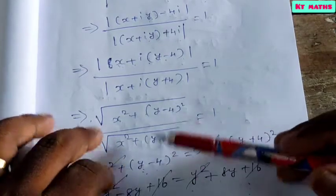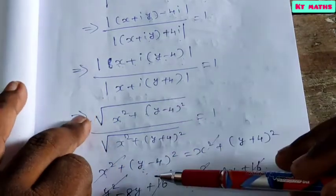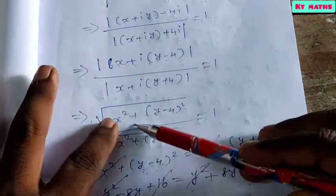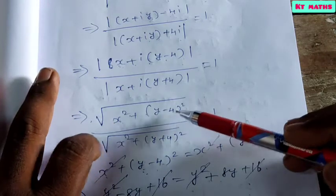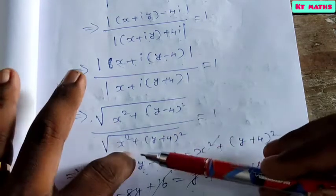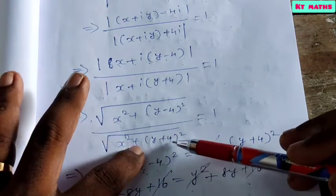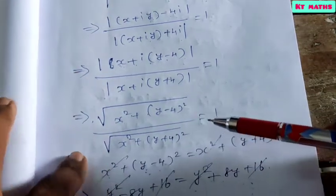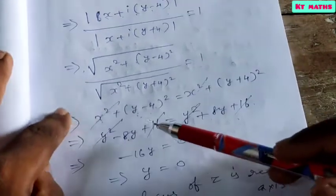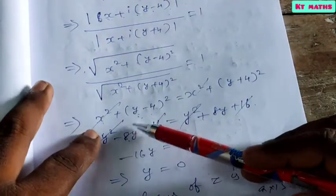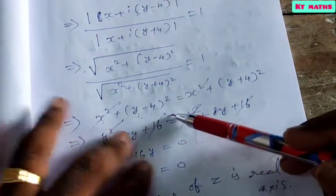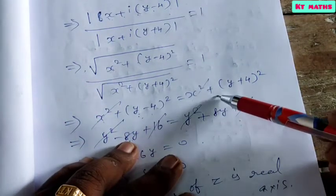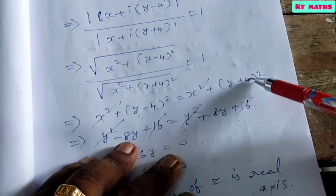Taking squares on both sides, the square roots cancel, and we get x squared plus (y minus 4) squared divided by x squared plus (y plus 4) squared equals 1.